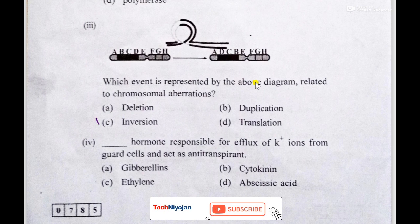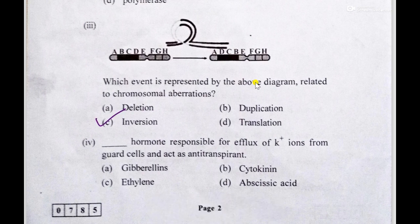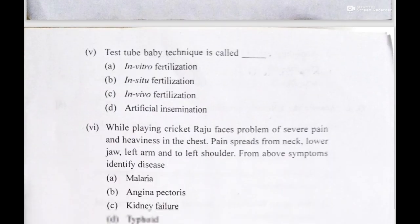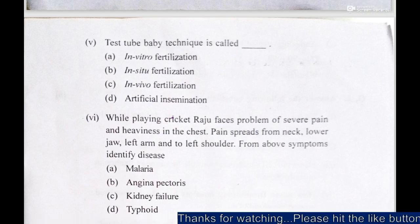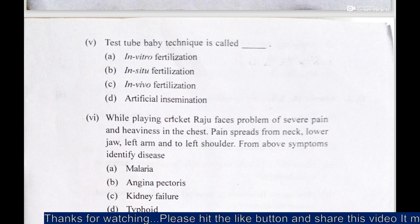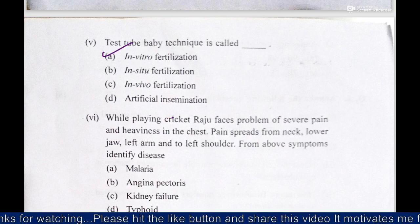Its answer is C — inversion. The fourth MCQ: which hormone is responsible for efflux of K+ ions from guard cells and acts as an anti-transpirant? Its answer is A — abscisic acid. The fifth MCQ: test tube baby technique is called in vitro fertilization.